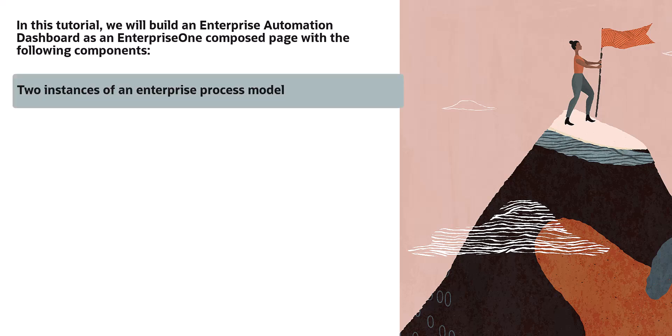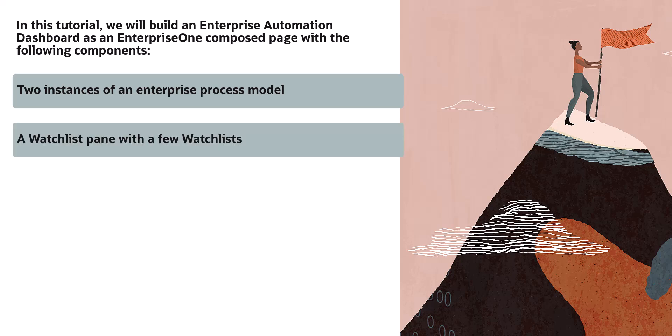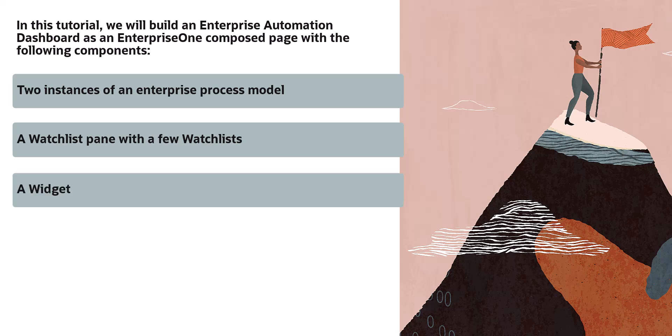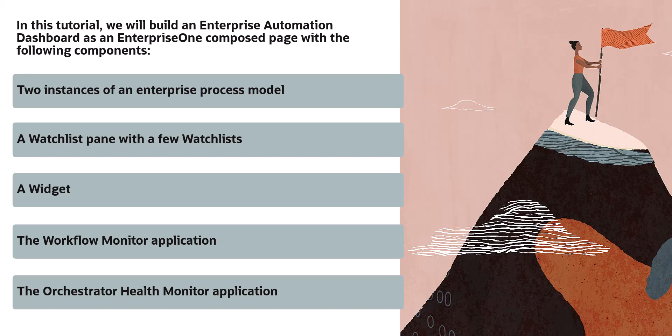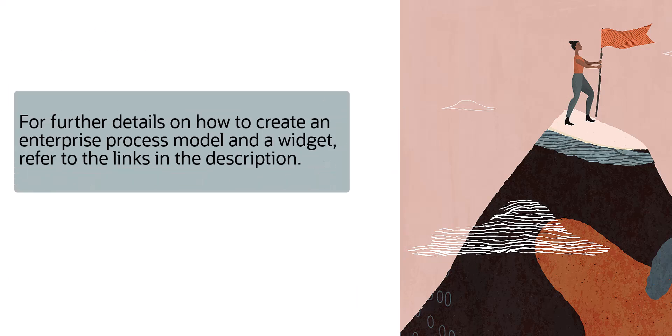Two instances of an Enterprise Process Model, a watchlist pane with a few watchlists, a widget, the Workflow Monitor application, and the Orchestrator Health Monitor application. For further details on how to create an Enterprise Process Model and a widget, refer to the links in the description.